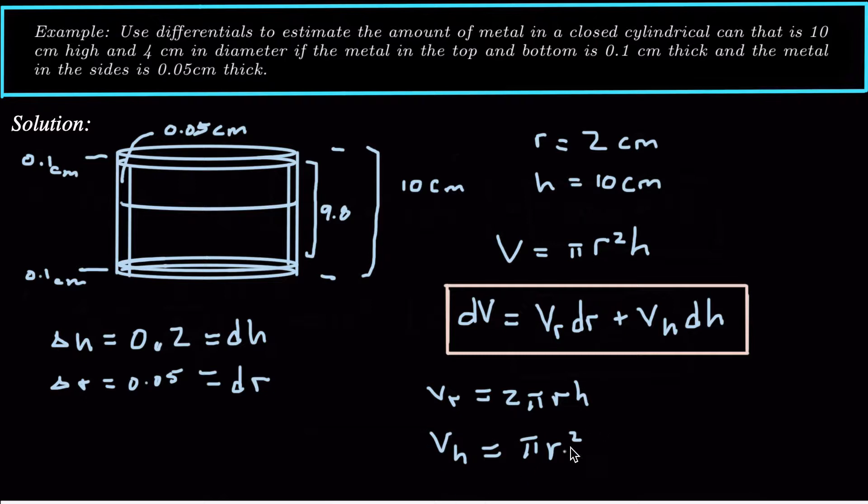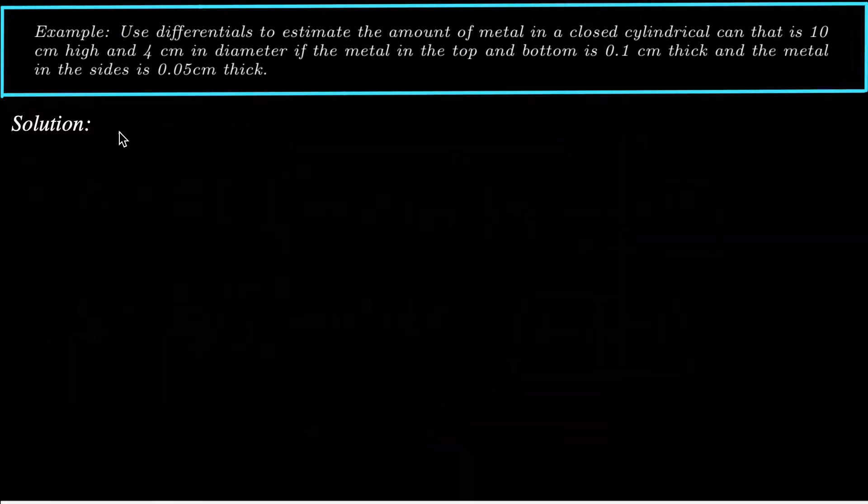So now what we want to do is evaluate V sub r at these two r and h values. So V sub r of 2 comma 10 is going to be equal to 2 pi times r, which is 2, times h, which is 10. So that's going to be 40 pi.